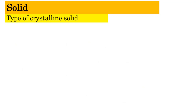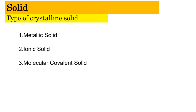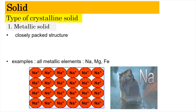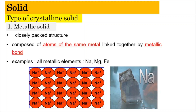The crystalline solid is subdivided into four types. First, the metallic solid, which is arranged in a closely packed structure composed of metal ions linked together by metallic bonds. In the electron sea model, electrons are free to move within this array, giving rise to properties such as good electrical conductivity and good heat conductivity. All metallic elements — sodium, magnesium, iron, and so on — are examples.